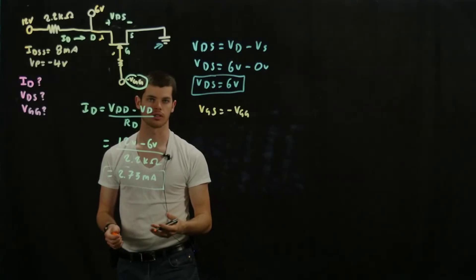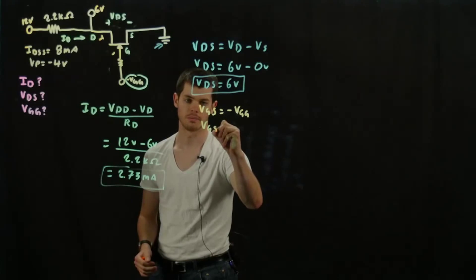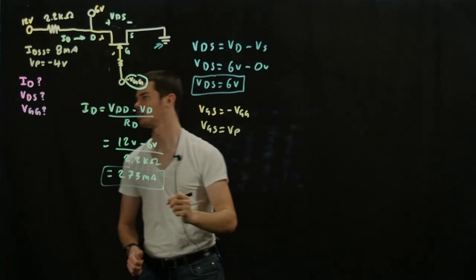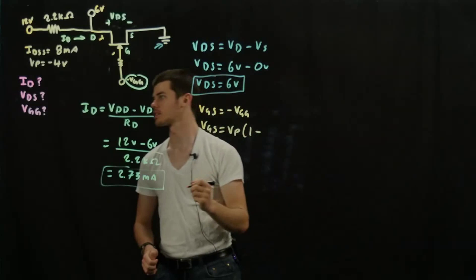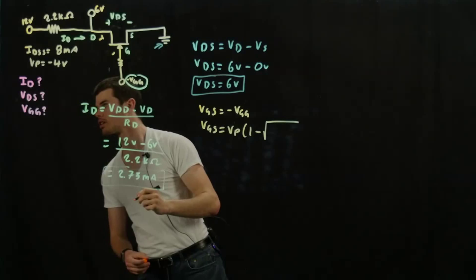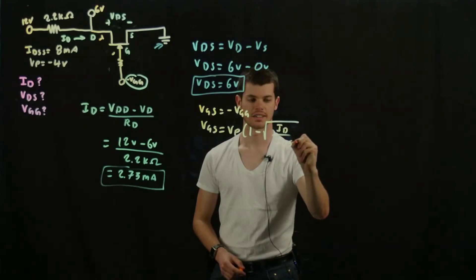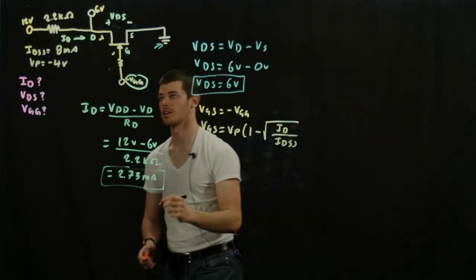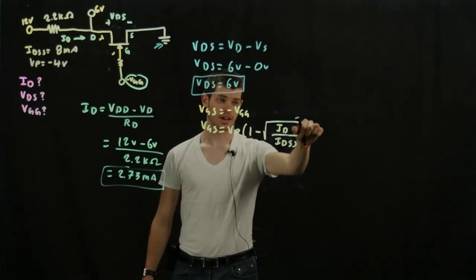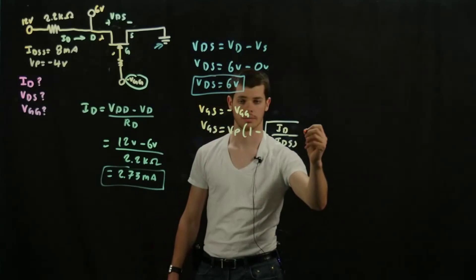Alright, now there's a certain relation for these. This one's a little bit more complicated. It's generally just best to memorize it. VGS is going to be equal to VP times 1 minus the square root of ID divided by IDSS. And so these two values are usually going to be given to you. You have IDSS and VP. And we already calculated ID, and we know it's right there, 2.73 milliamps. So we're just going to go ahead and plug in some values.